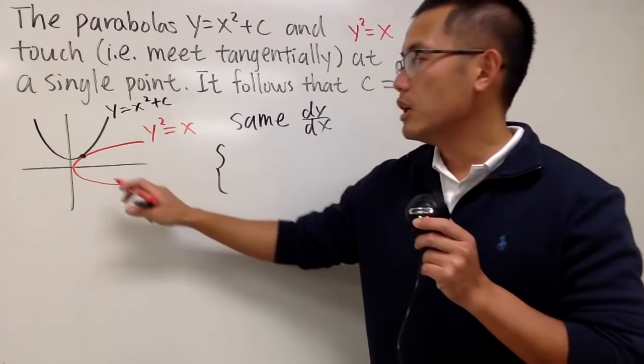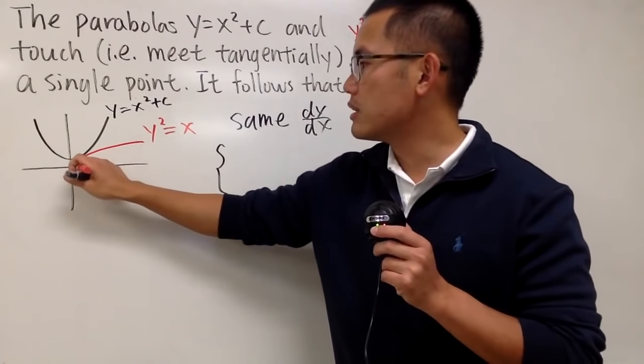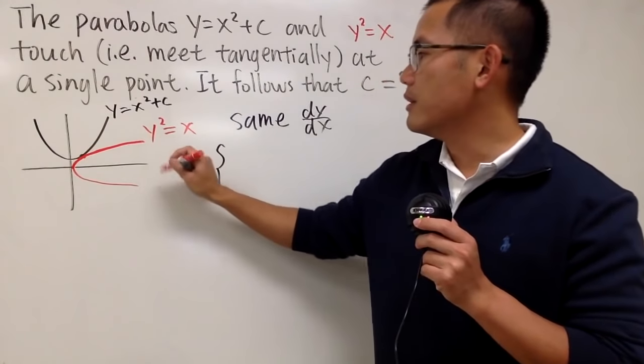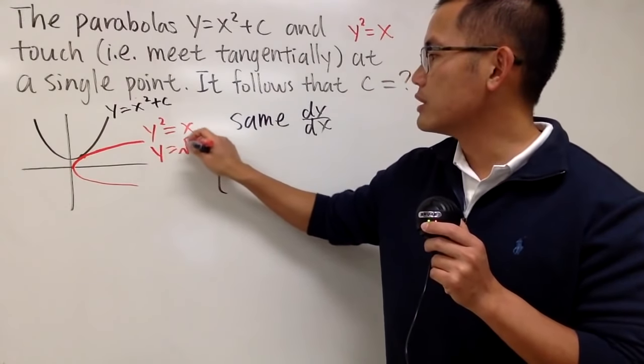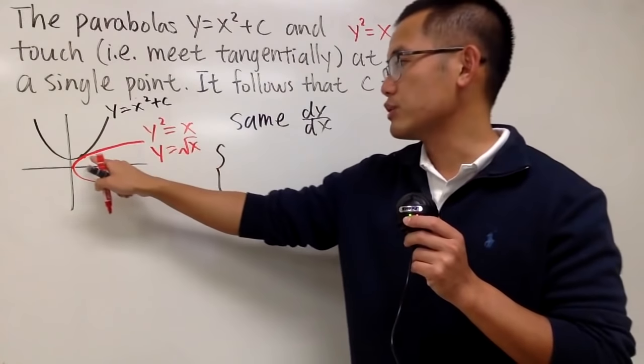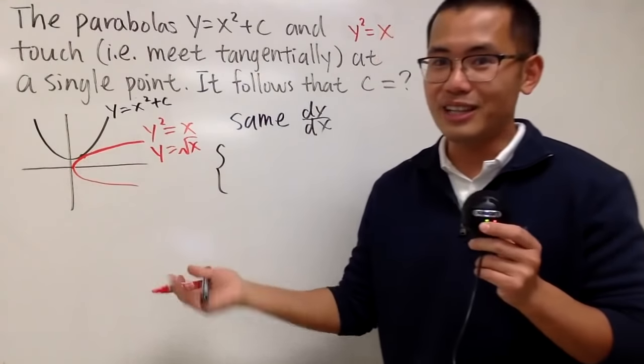In fact, if you want to do the derivative of this, you can actually just consider the top half, namely y equals square root of x. Because we are just focusing on this point of intersection.